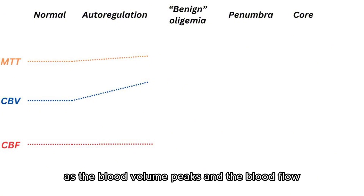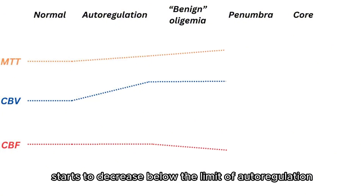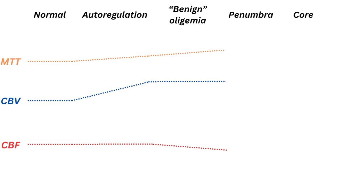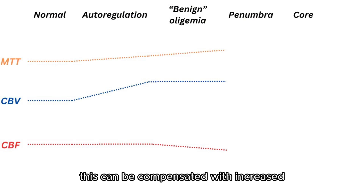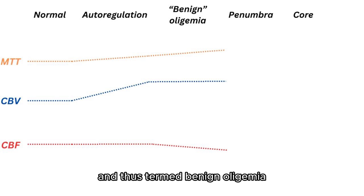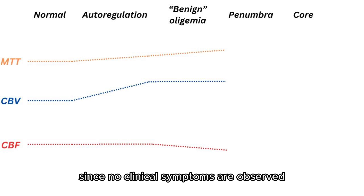As the blood volume peaks and blood flow starts to decrease below the limit of autoregulation, the brain tissue becomes hypoperfused. This can be compensated with increased cerebral perfusion pressure, which is sufficient for the metabolic demand, and is thus termed benign oligemia since no clinical symptoms are observed.